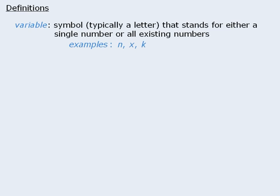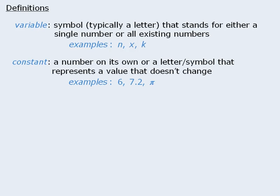The first word is variable. A variable is any symbol, typically a letter, that stands for either a single number or all existing numbers. The next word is constant. This is either a number on its own, or a letter or symbol that represents a value that does not change. Some examples include 6, 7.2, and pi.